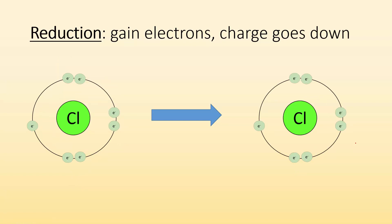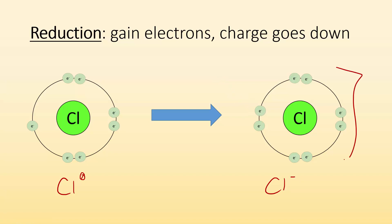Reduction is gaining electrons, so the charge goes down. Here I have chlorine with seven valence electrons and its charge is zero. During reduction, an electron is gained. If we add one more electron, now we have the chloride ion, Cl⁻. That whole thing has a minus one charge now because it gained one electron.